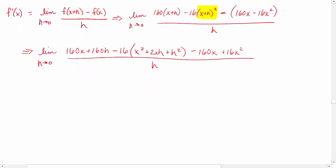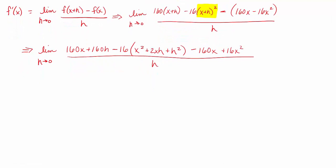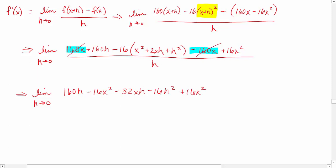I see some like terms here, I might as well combine. Those are going to fall out for us, and I'm going to distribute the negative 16. We get the limit as h approaches 0 of 160h - 16x² - 32xh - 16h² + 16x², all over h.